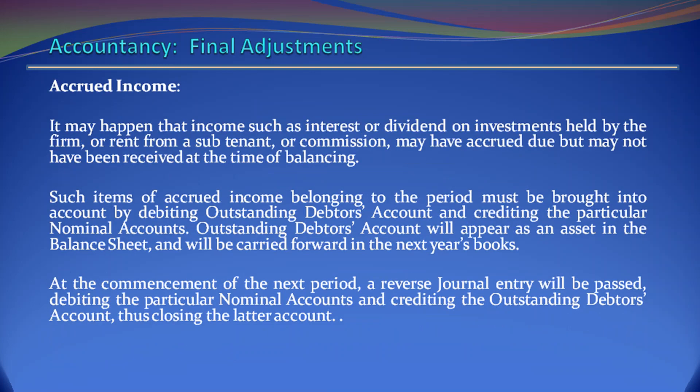Accrued Income. It may happen that income such as interest or dividend on investments held by the firm, or rent from a sub-tenant or commission, may have accrued due but may not have been received at the time of balancing. Such items of accrued income belonging to the period must be brought into account by debiting outstanding debtors account and crediting the particular nominal accounts. Outstanding debtors account will appear as an asset in the balance sheet and will be carried forward in the next year's books. At the commencement of the next period, a reversal journal entry will be passed debiting the particular nominal accounts and crediting the outstanding debtors account, thus closing the latter account.